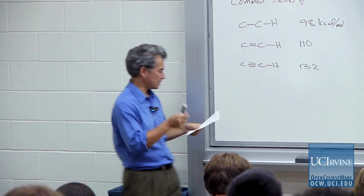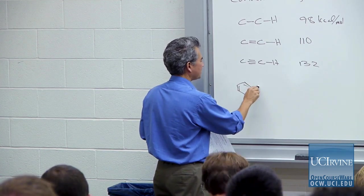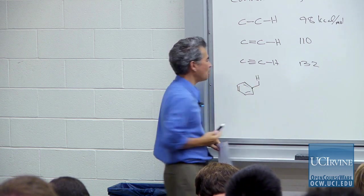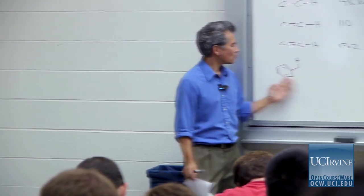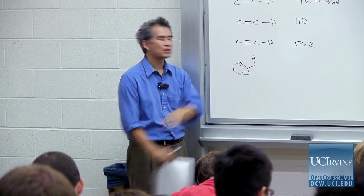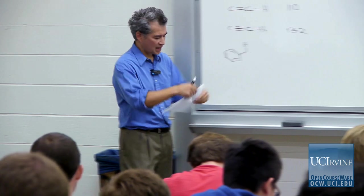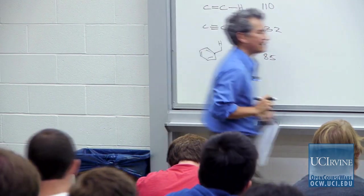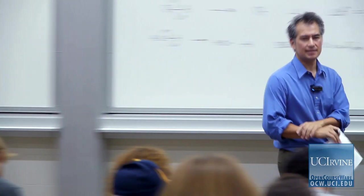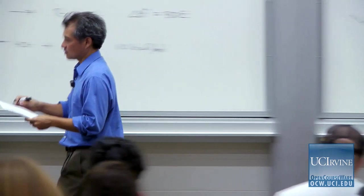Another thing that affects C-H bonds is nearby pi systems. In undergraduate organic chemistry you learned you can brominate the benzylic position of molecules — that's because this C-H bond is weak, about 85 kcal/mol. And it's very similar for an allylic C-H as it is for a benzylic C-H. So resonance can affect bond strengths.